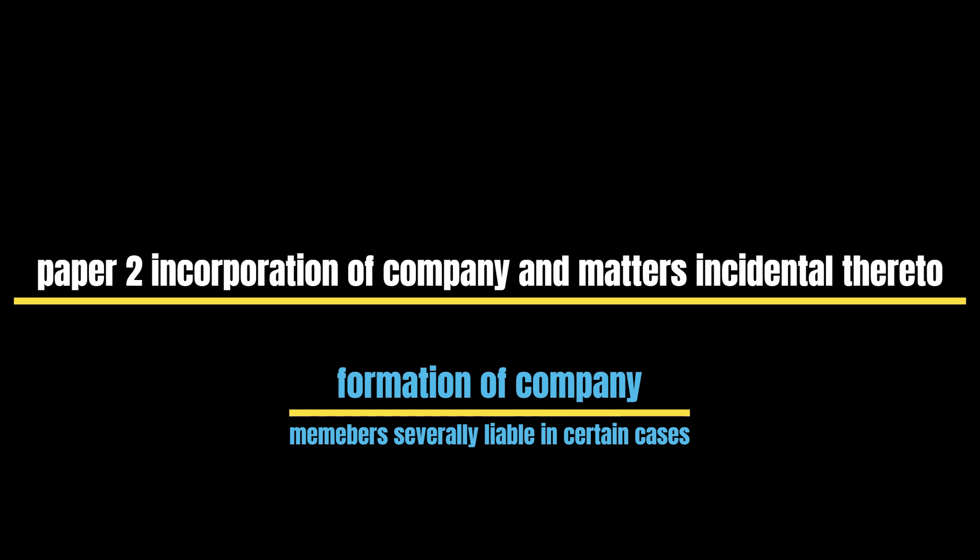Members Severally Liable in Certain Cases – i.e., reduction in minimum membership: Members may have limited or unlimited liability depending on the nature of the company. Generally members are jointly liable for the debts of the company, but they shall be severally liable for payment of the debt of the company and may be severally sued if at any time the number of members is reduced below 7 (public company) or 2 (private company), and such company carries on business for more than six months with the reduced number of members, and every such person who carries on business after those six months is aware of the fact that business is being carried on with reduced members.